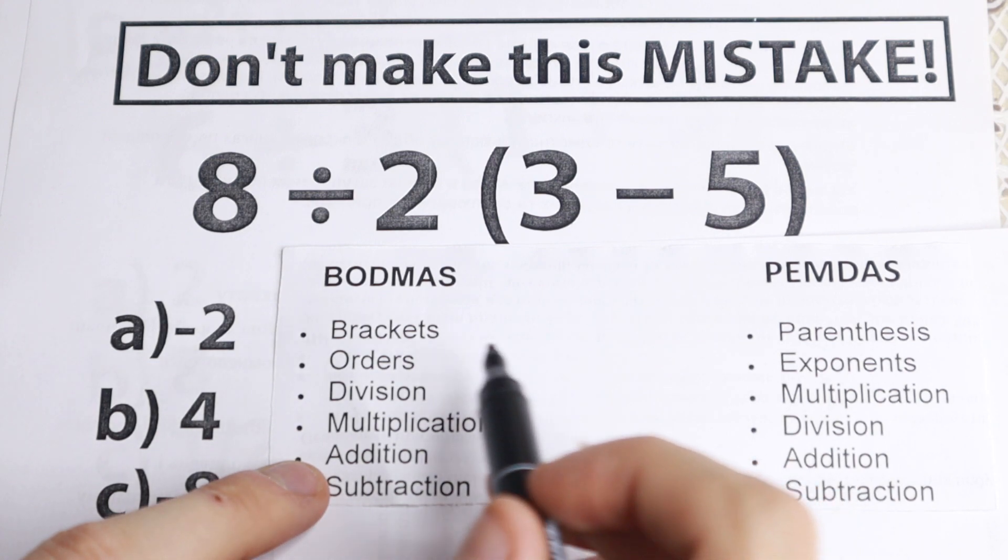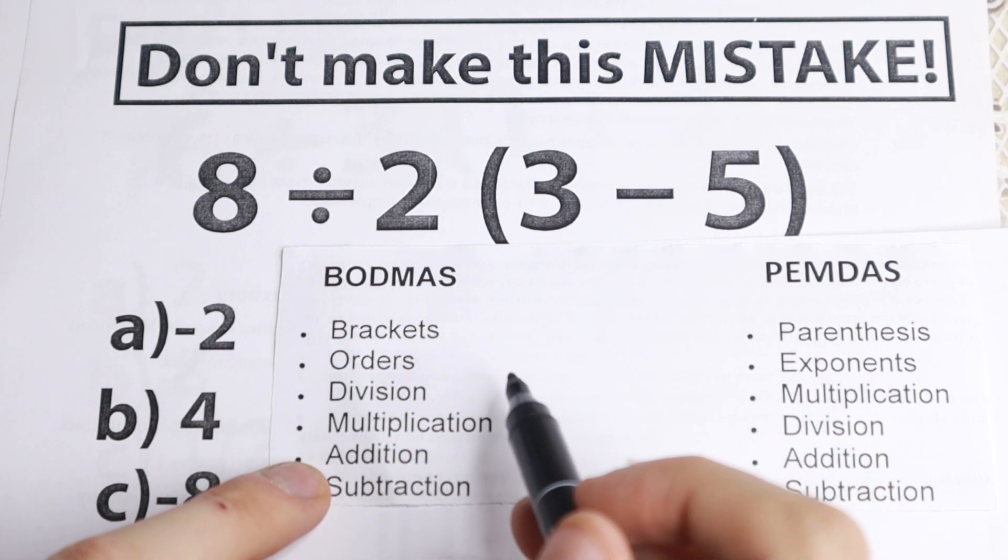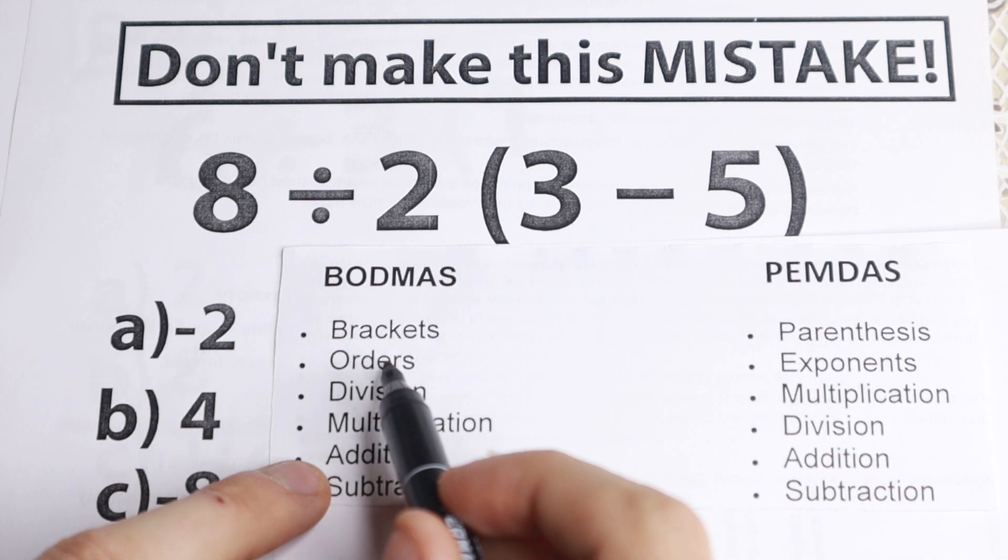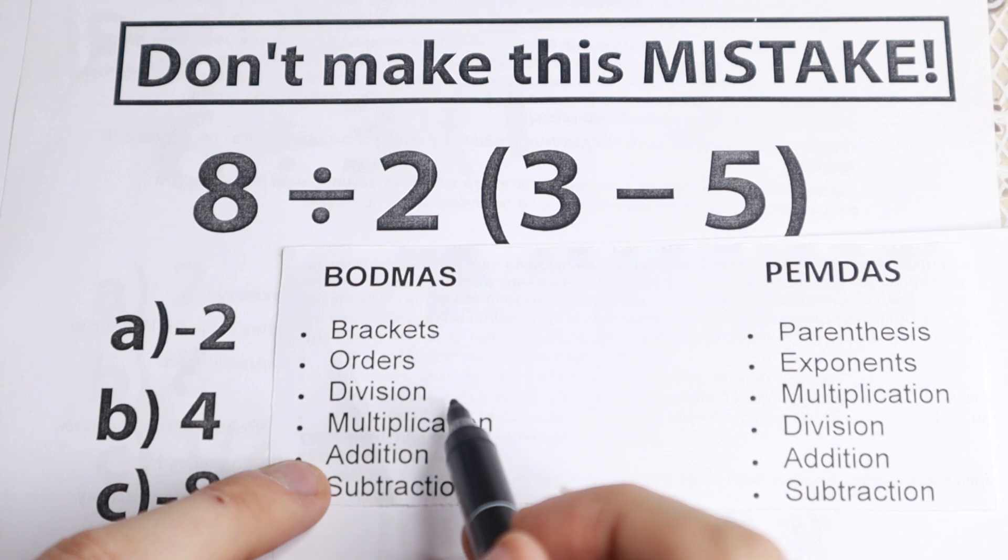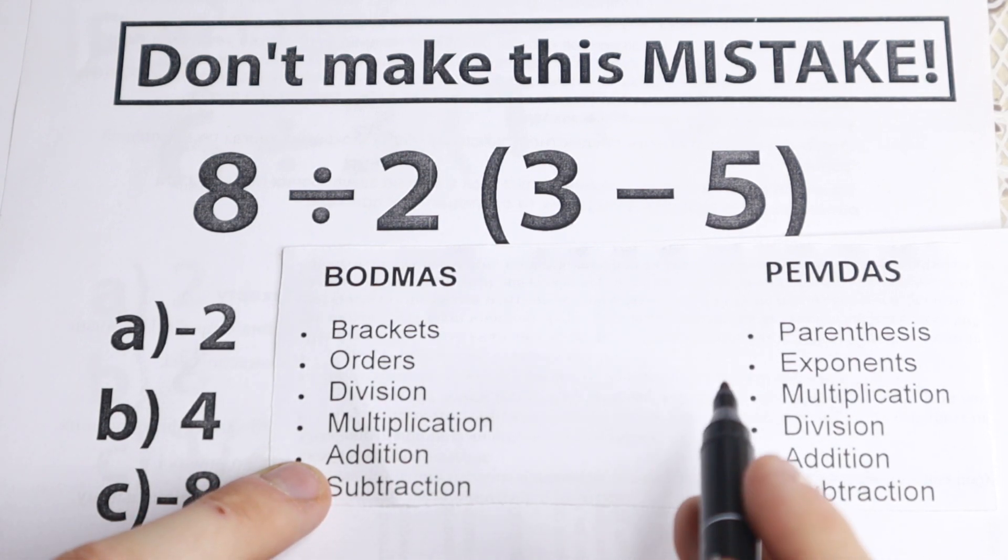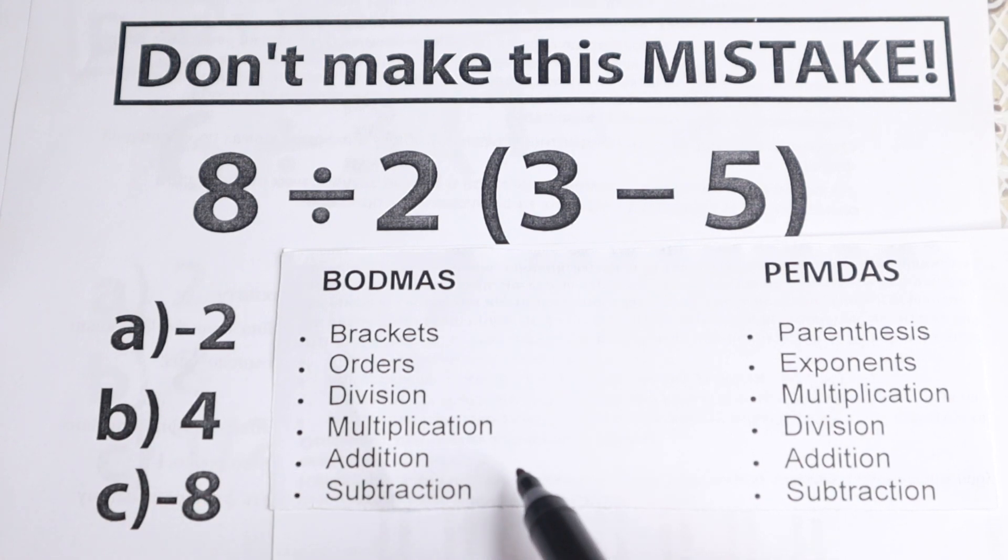So the expression can be simplified by these methods, and first we need to evaluate parentheses and brackets, and then evaluate exponents and orders, then multiplication, division, and multiplication in both methods, and finally evaluate addition and subtraction.